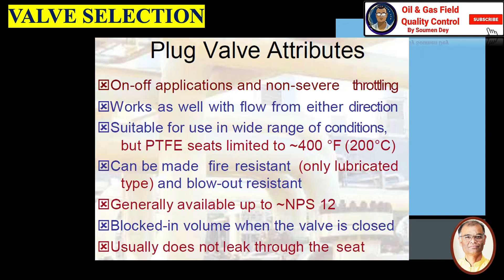Plug valve attributes: on and off application, non-CBR throttling, works with flow from either direction, suitable for use in a wide range of conditions. PTFE seat is limited to 400°F (200°C). Can be made fire resistant — lubricated type only — and blowout resistant. Generally available up to NPS 12. Blocked-in volume when the valve is closed, and usually does not leak through the seat.